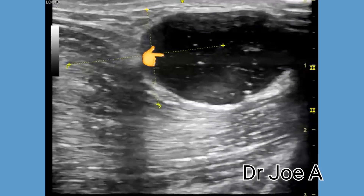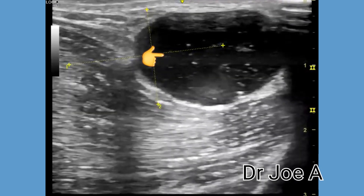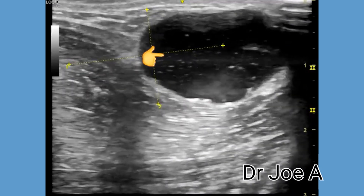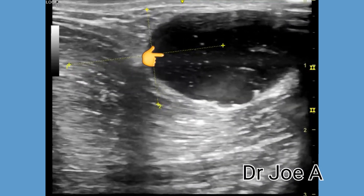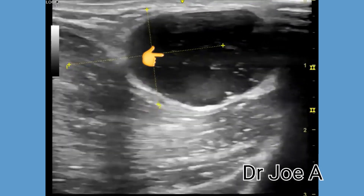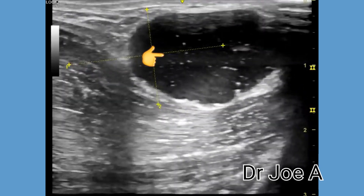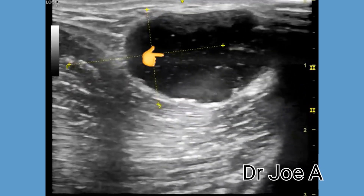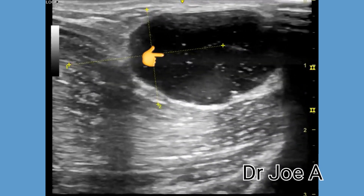A ganglion cyst is a cyst that can develop from the joint or tendon sheath and can vary in size from the size of a pea to that of a golf ball.